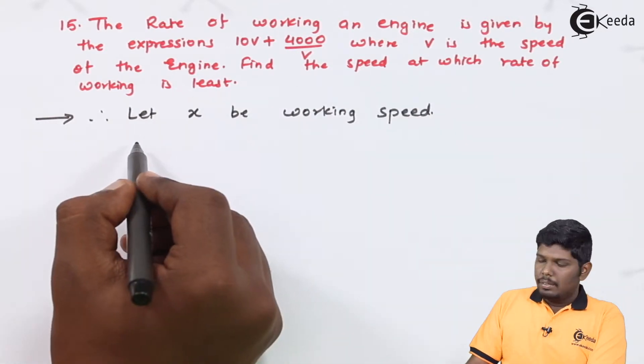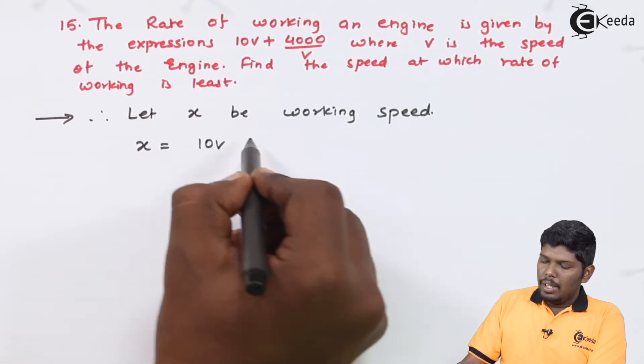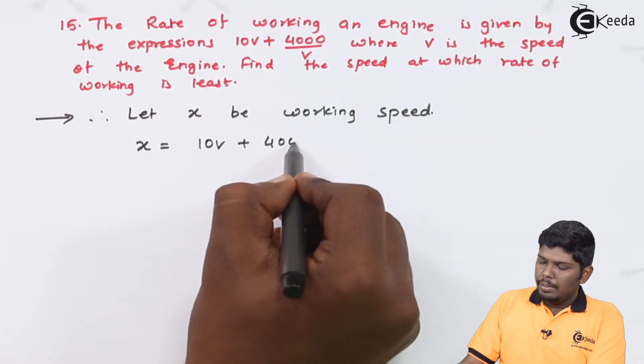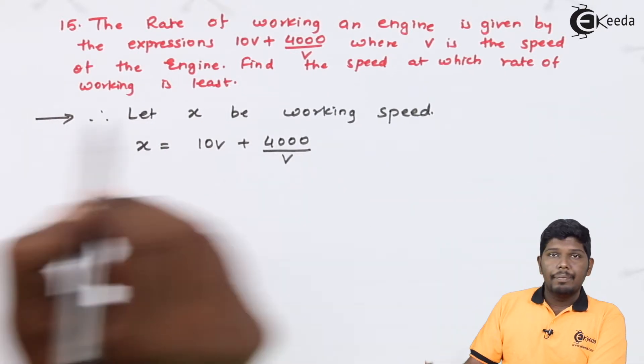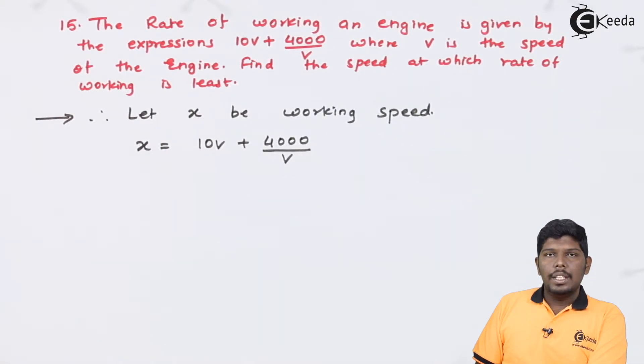Here, X is given as 10V plus 4000 upon V. Now the equation is ready.